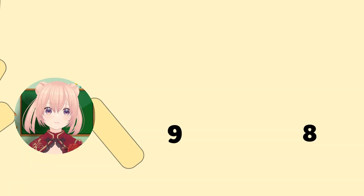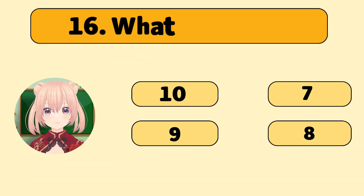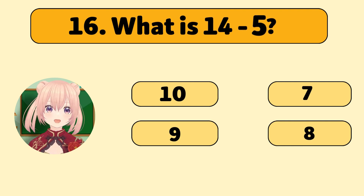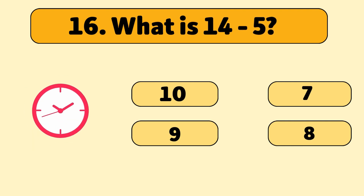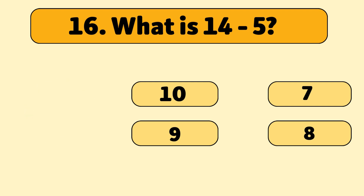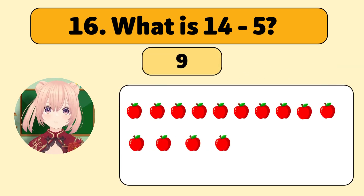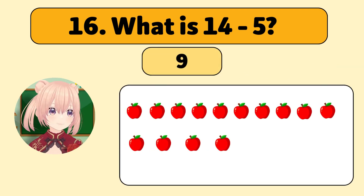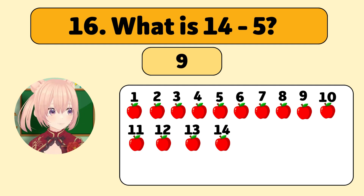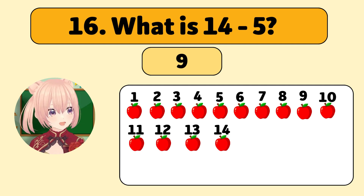What is 14 minus 5? The answer is 9! We start with 14 apples and take away 5!